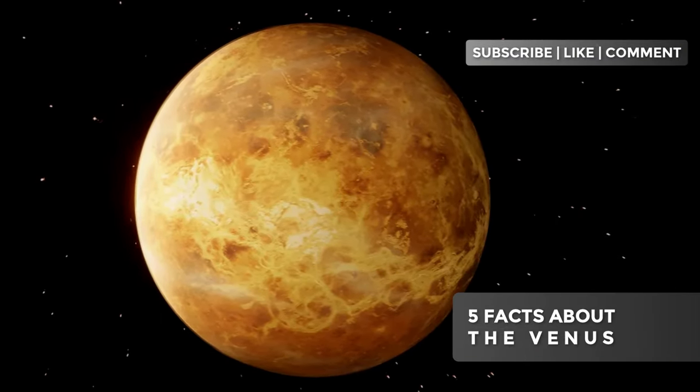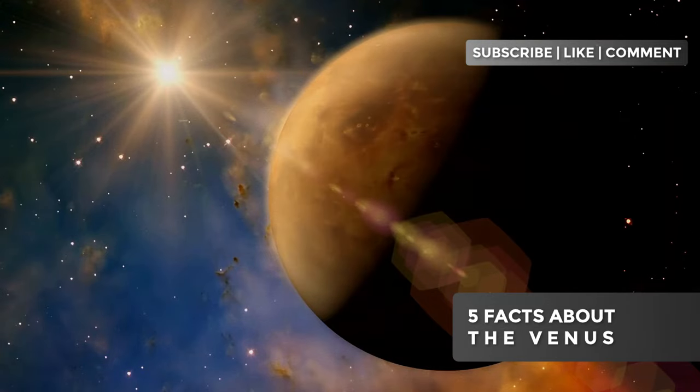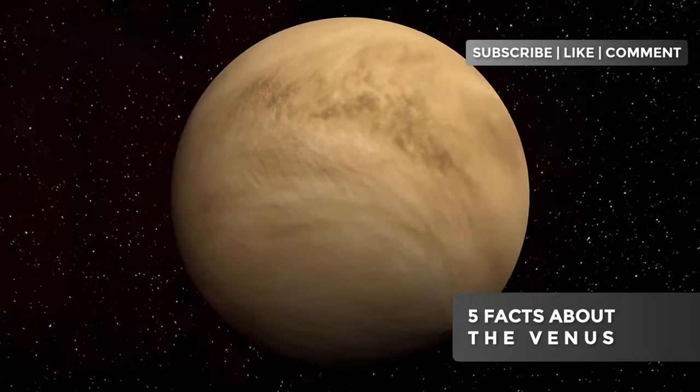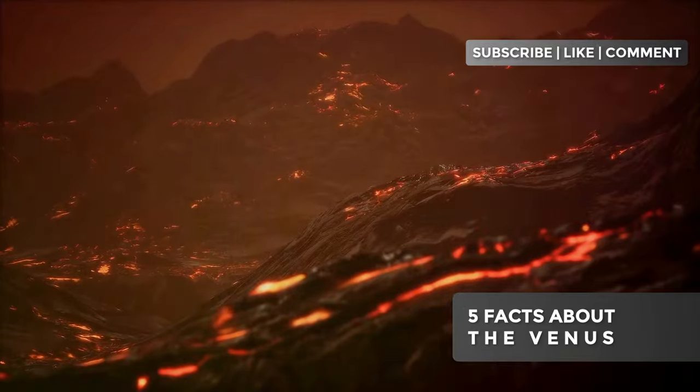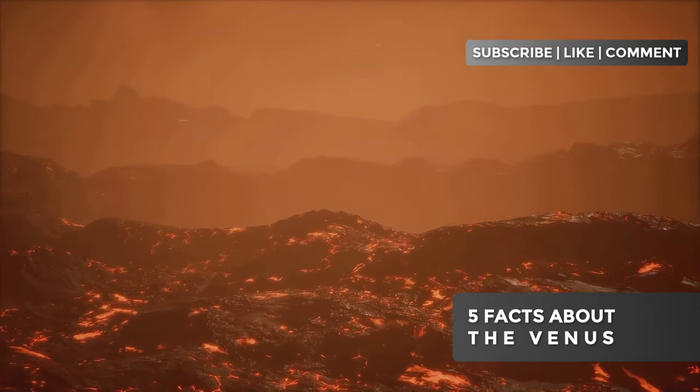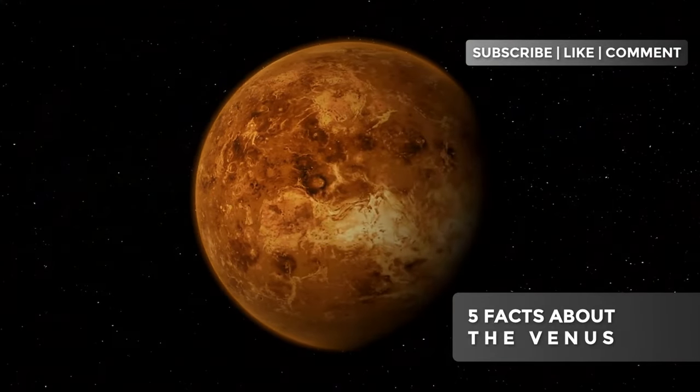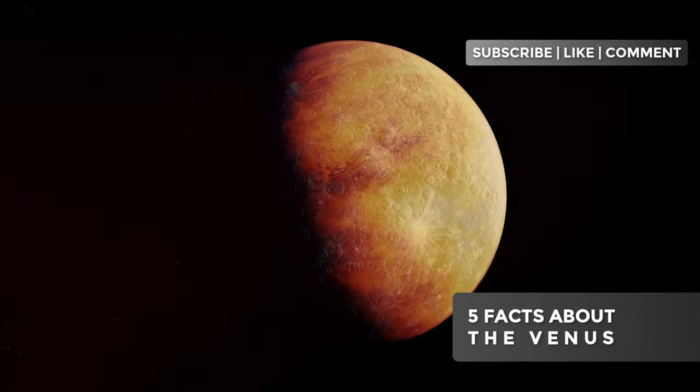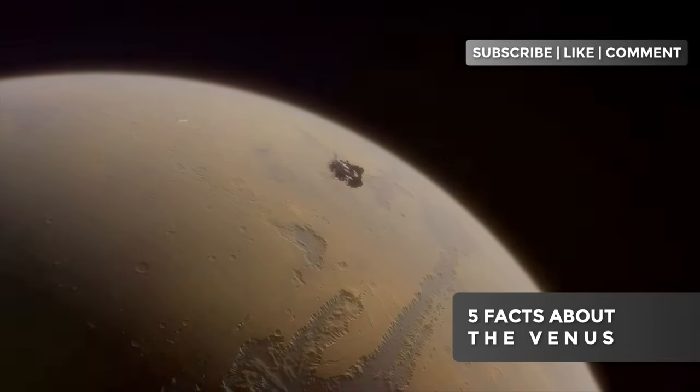This extreme heat not only shapes the Venusian landscape, but also makes direct exploration by conventional probes impossible. The few missions that managed to land on Venus's surface had extremely short lifespans, quickly succumbing to the hellish heat. The Soviet Venera 13 probe, for example, lasted only 127 minutes before its systems were completely fried. The heat on Venus is so intense it creates unique phenomena. The rocks on the planet's surface emit a reddish glow due to the high temperatures, creating a surreal landscape that more closely resembles artistic depictions of hell than a real planet. Moreover, the atmosphere is so dense and hot that at certain altitudes, carbon dioxide reaches a state known as a supercritical fluid, where the distinctions between liquid and gas become indistinguishable. This extreme heat not only shapes Venus's present, but also its past and future. Many scientists believe Venus might have been habitable in the distant past, with liquid oceans on its surface.